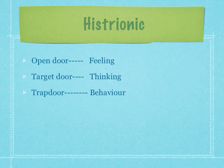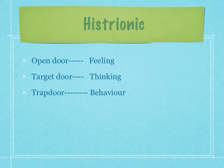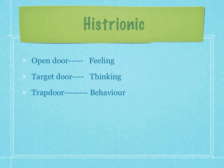Let's go on to histrionic — somebody who's an hysteric. Their open door is feeling, so feeling inquiry or feeling questions is the best way to increase rapport with this type of person. Their target door is thinking — they quite like a therapist that will ask them thinking questions. But they need first to be communicated with through feeling questions. And of course, where they don't like to go is anything to do with behavioural change. In the end, they need to know they can think and feel at the same time.